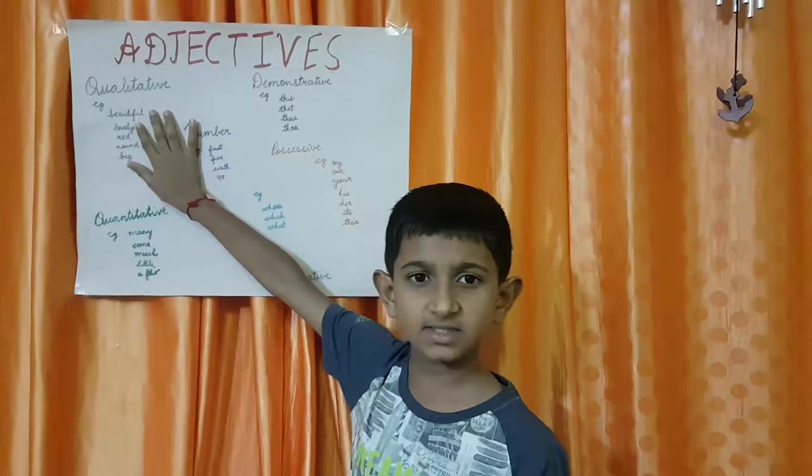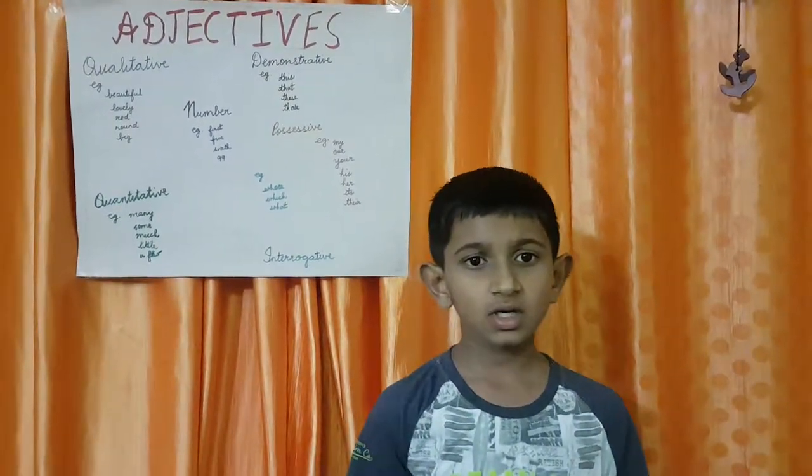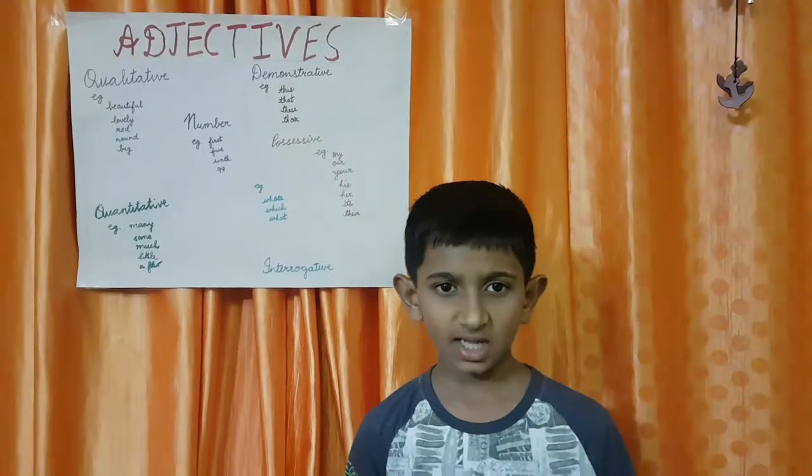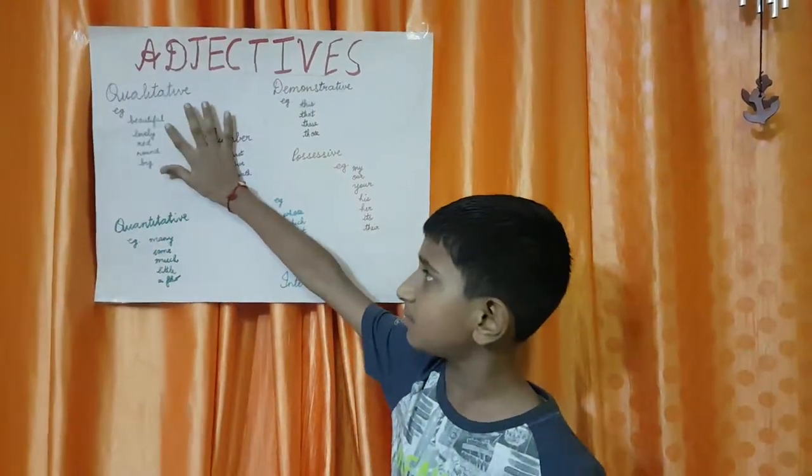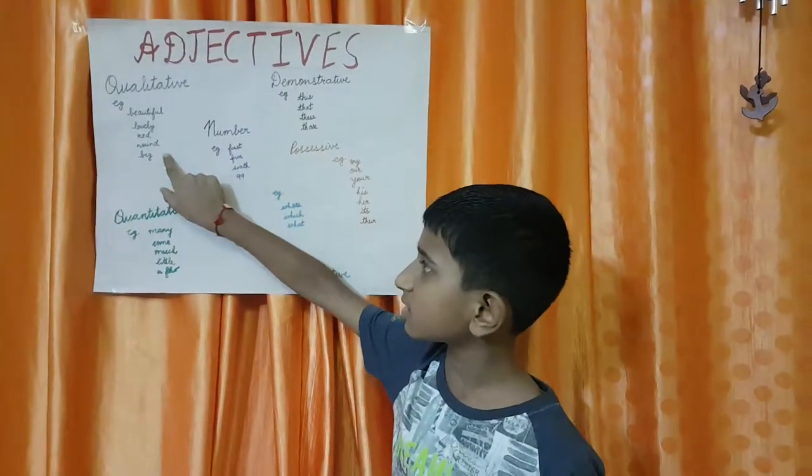Qualitative adjective talks about a quality, size, shape or color of an object. For example, Beautiful, Lovely, Red, Round, Big.